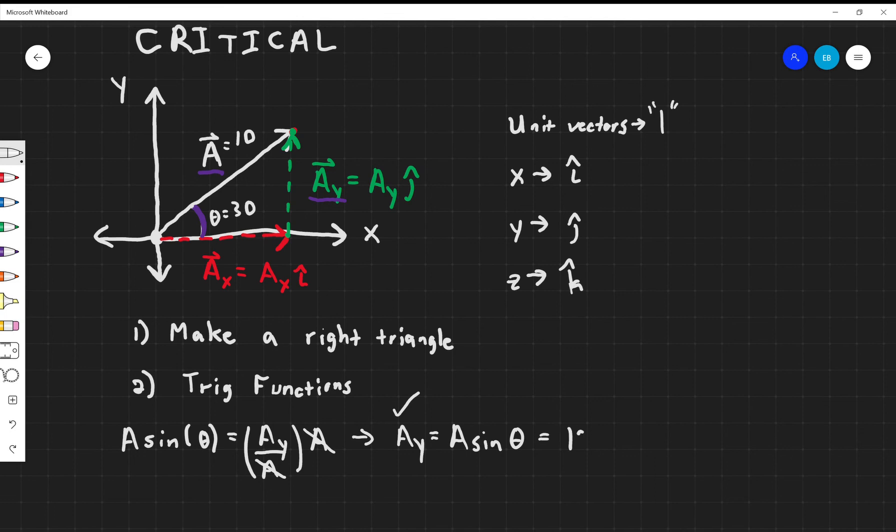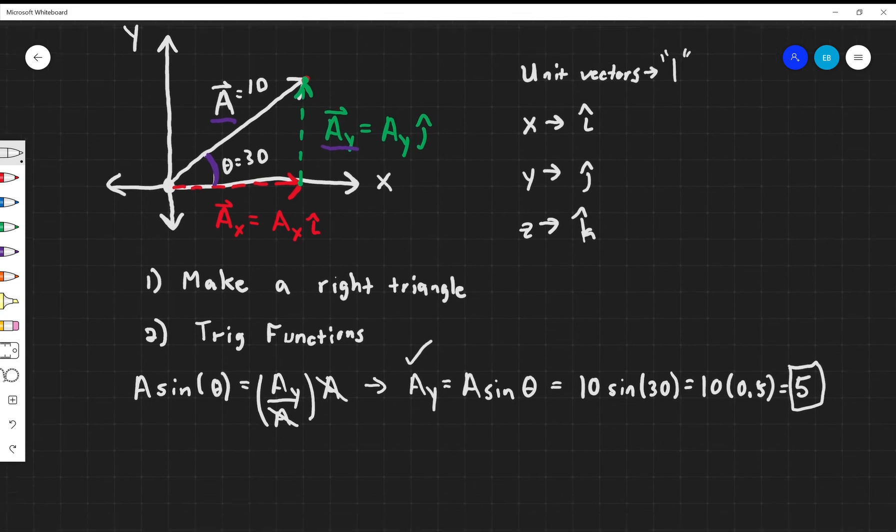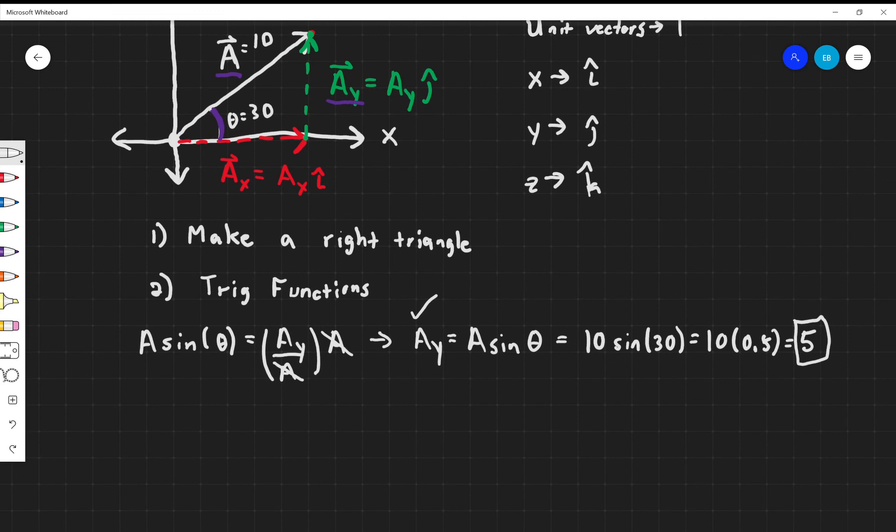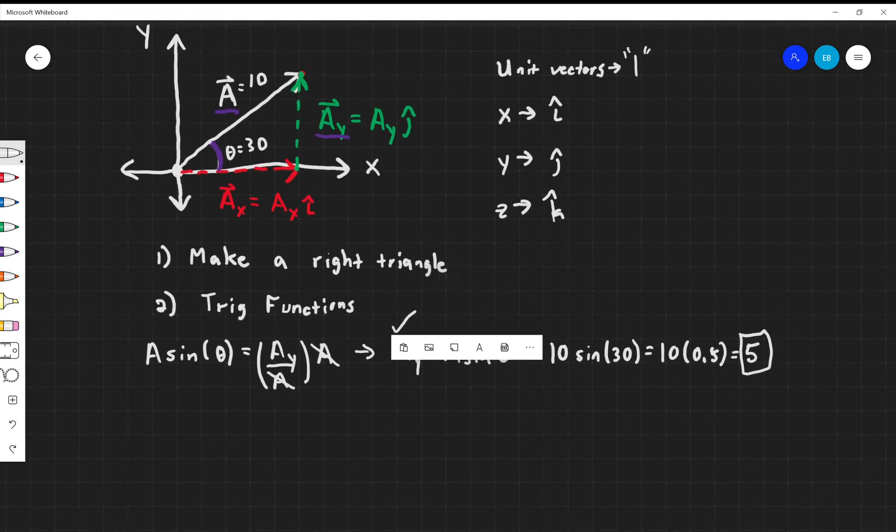I can plug in the numbers that I have. I can plug in 10, multiply it by sine of 30, and plug this into your calculators now so that you can make sure you are getting 10 times 0.5, which is equal to 5. Make sure you are getting this in your calculators. If you are not, your calculator might be in the wrong mode, and we need to fix that now before we get too far into the semester.